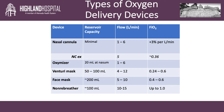Here we have a chart of the different types of oxygen delivery devices that we'll be using in the acute care setting. We'll review five different devices. This chart outlines the reservoir capacity, the flow rate in liters per minute, and also the fraction of inspired oxygen that each of these devices can potentially provide.